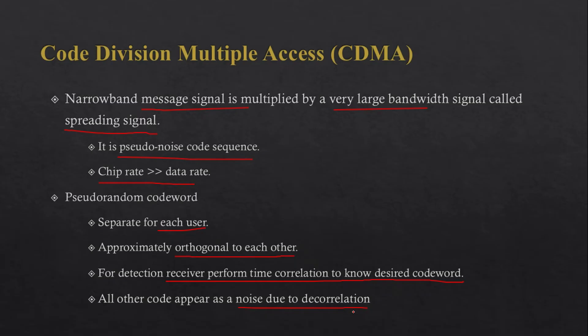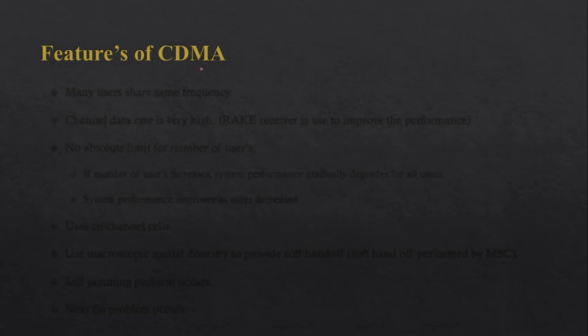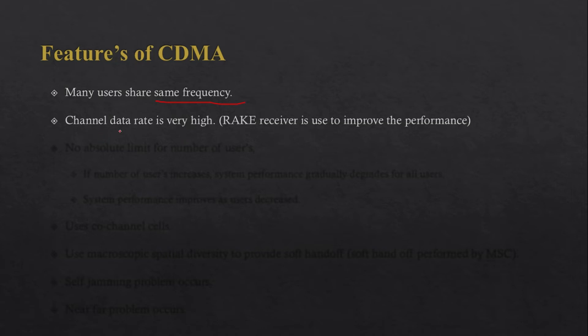Now let's see some features of CDMA. The first feature is that many users share the same frequency, so resources can be used very efficiently. Another feature is that the channel data rate is really high in CDMA, and therefore we require a RAKE receiver, which compensates for the delay generated due to multipath signals and improves the performance of the system.